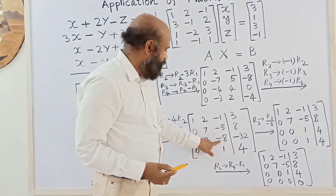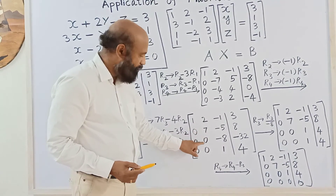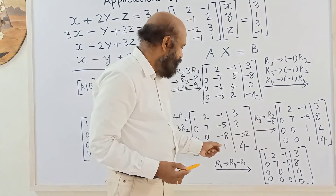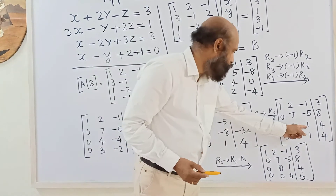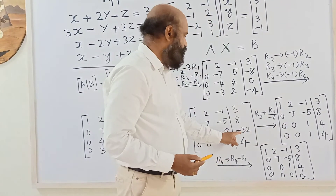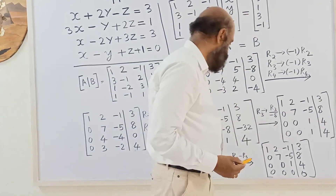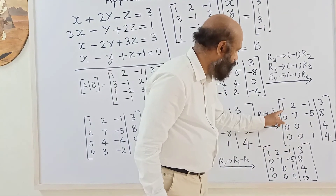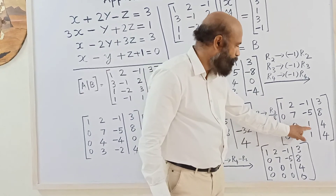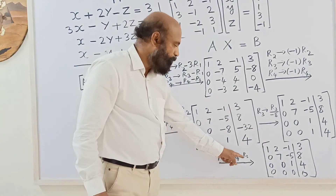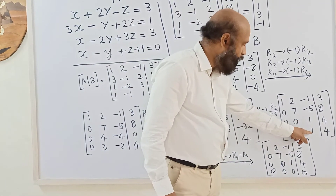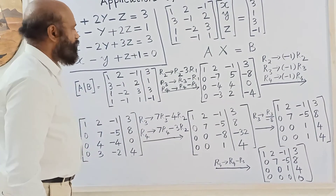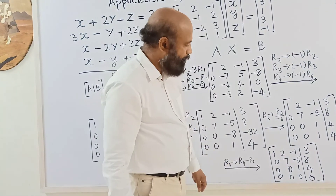The matrix now has 1, 0, 0, 0 in the first row and 7, 0, 0 in the second. The third row has a negative leading entry, so we divide by -8, giving: -8 ÷ -8 = 1, and -32 ÷ -8 = 4. The third row becomes 1, 4. Now below this 1, the fourth row entry must become zero, so we subtract the third row from the fourth row: 1 - 1 = 0, 4 - 4 = 0. The augmented matrix is now in row echelon form.